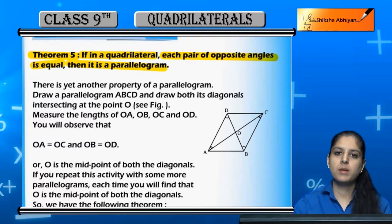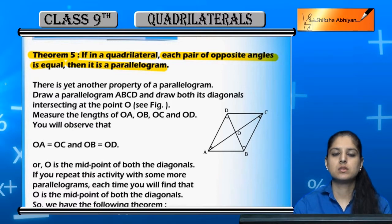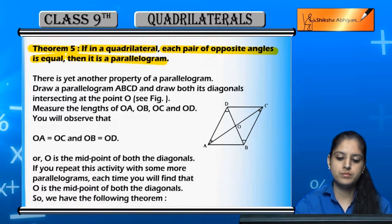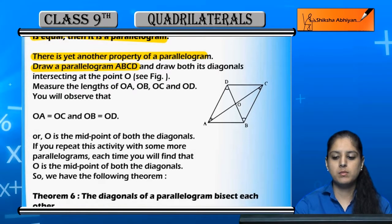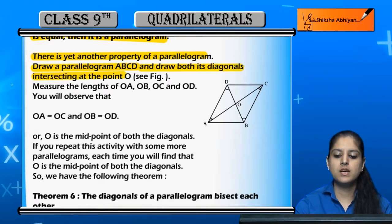There is yet another property of a parallelogram. Draw parallelogram ABCD and draw both its diagonals intersecting at point O. Ek parallelogram banaya ABCD aur us parallelogram ke dono diagonals bana - AC aur BD.